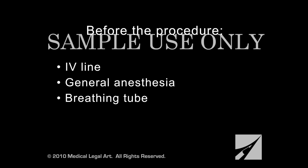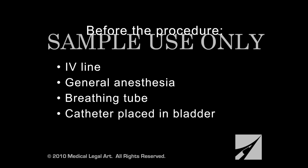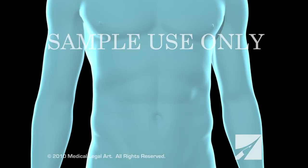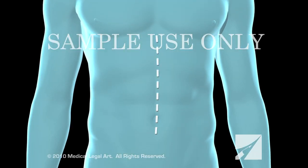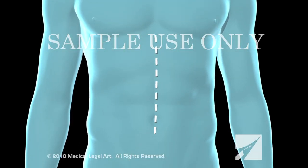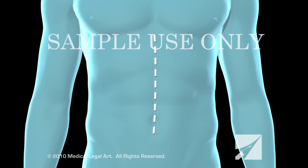When you are asleep, a catheter will be inserted into your bladder to drain your urine and monitor your kidney function. Your surgeon will begin by making an incision from the breastbone to below the navel.